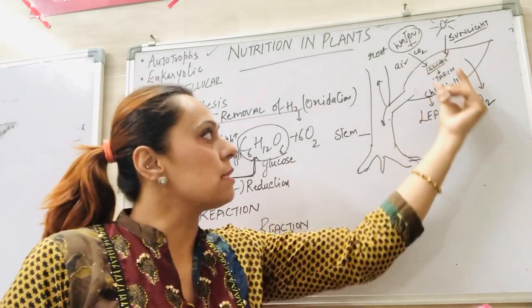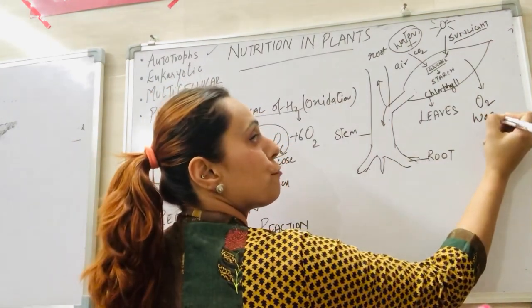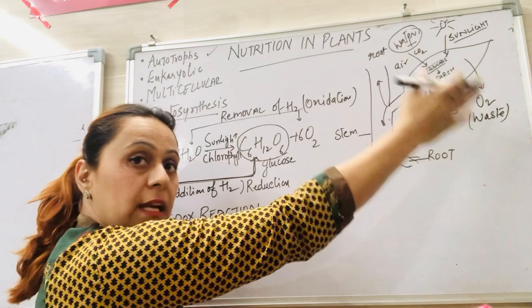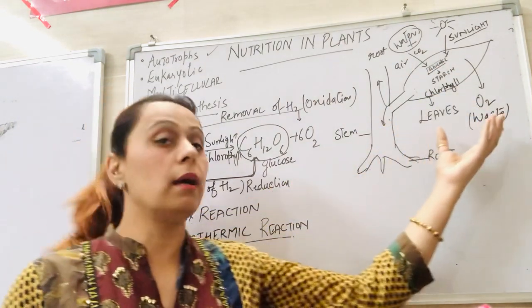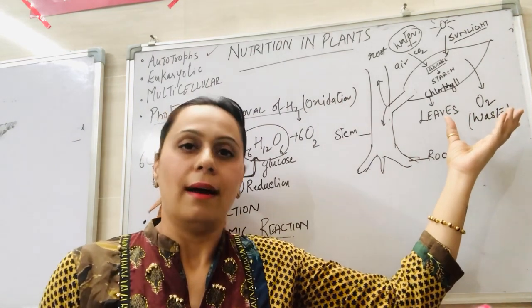So starch and oxygen are produced. Oxygen is a waste for the plant. It is totally a waste for the plant. So it will be released out from the plant and it is a life supporting gas for humans or animals. But it is a waste gas for plants.